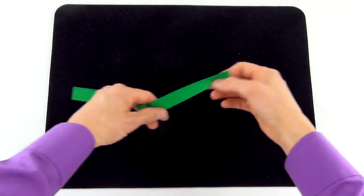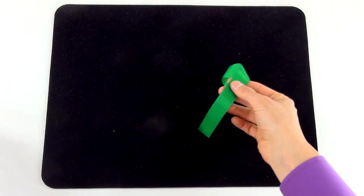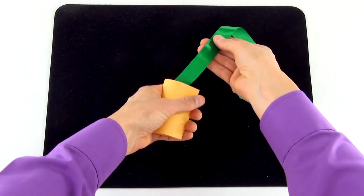To start the trick, bring out and show your piece of ribbon to your audience. Next, bring out the envelope, being careful not to show the back side with the hole in it. Place the ribbon inside the envelope and pull it through.